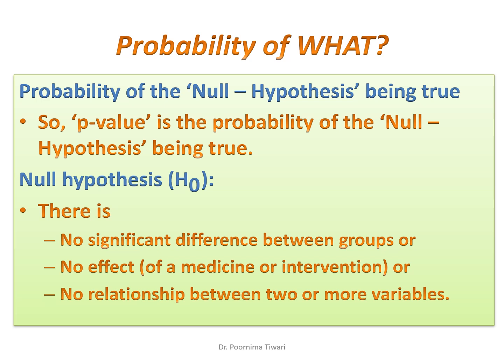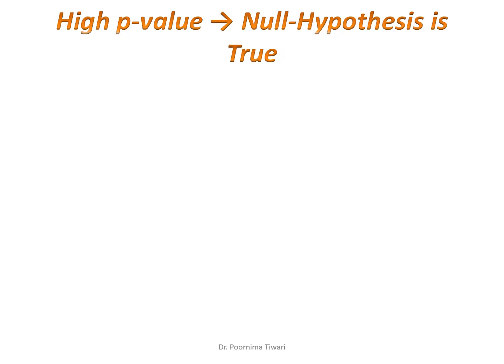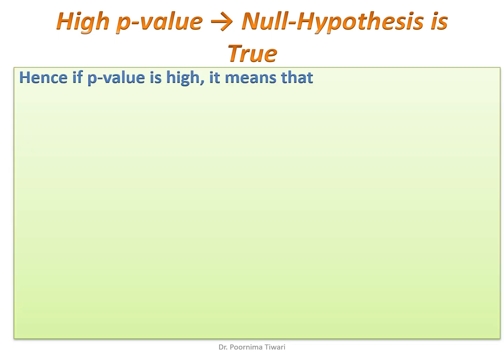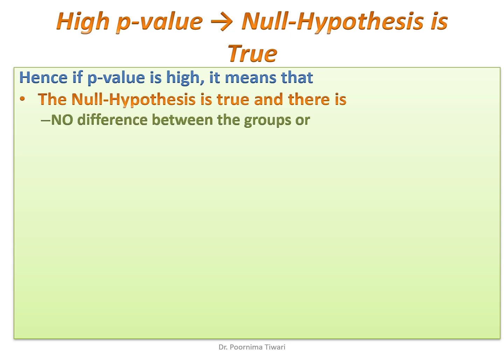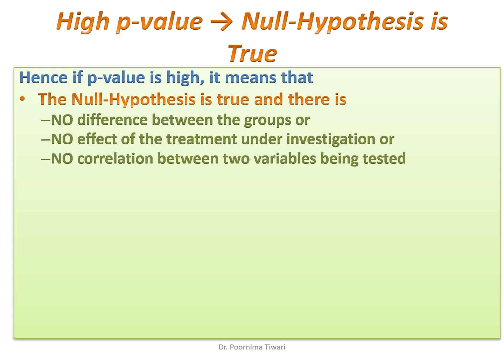So there is no difference between the groups unless proved otherwise by having a low p-value. If the p-value comes out to be high, that means the null hypothesis which you assumed at the very beginning is true. A high p-value means that the null hypothesis is true — there is no difference between the groups, no effect of the treatment, or no correlation between the two variables.